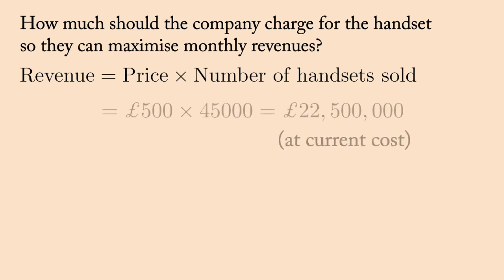For example, here, without any changes, the revenue is £22,500,000. But with the new input from the sales team, we know that for each £20 decrease in price, they can sell an increase of 5,000 handsets per month.